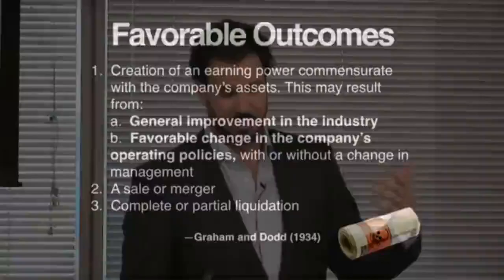So this is actually Graham's list. He talks about, one, that's just general improvement in the industry. And this is a very common occurrence — that the industry's in a trough, the business is in a trough, it's got a period of bad luck, perhaps some bad management. And either the incumbent managers turn the company around or external managers are brought in. Less commonly, a sale or a merger or some sort of liquidation.